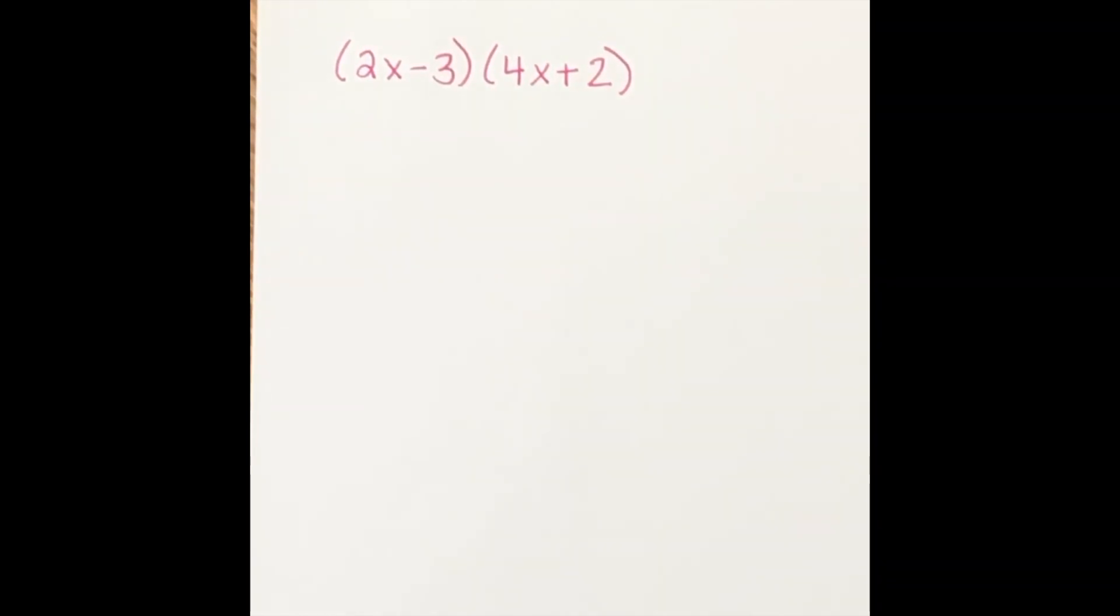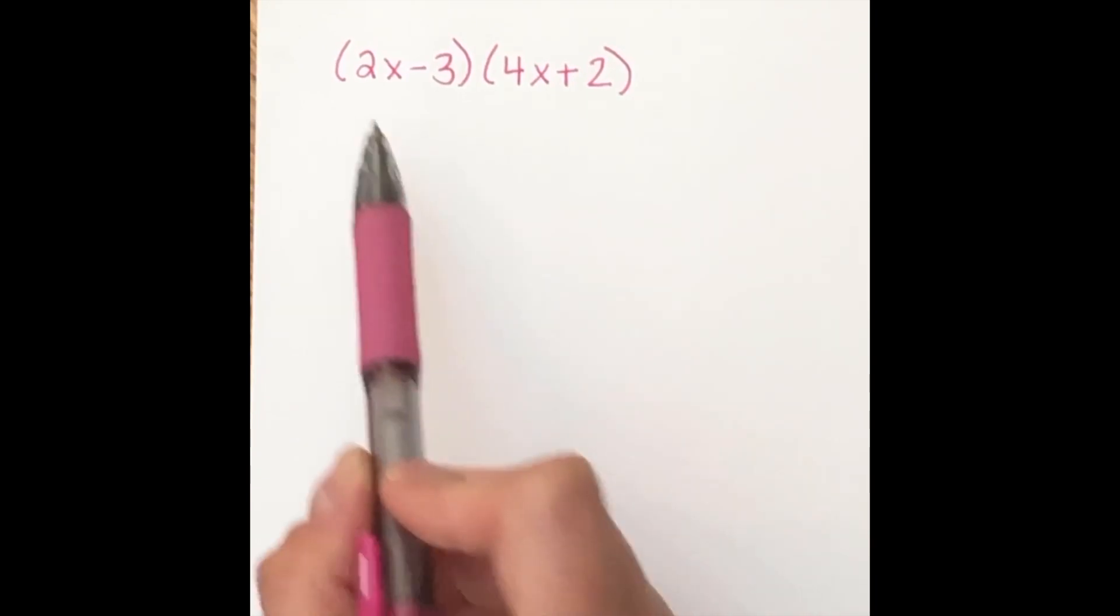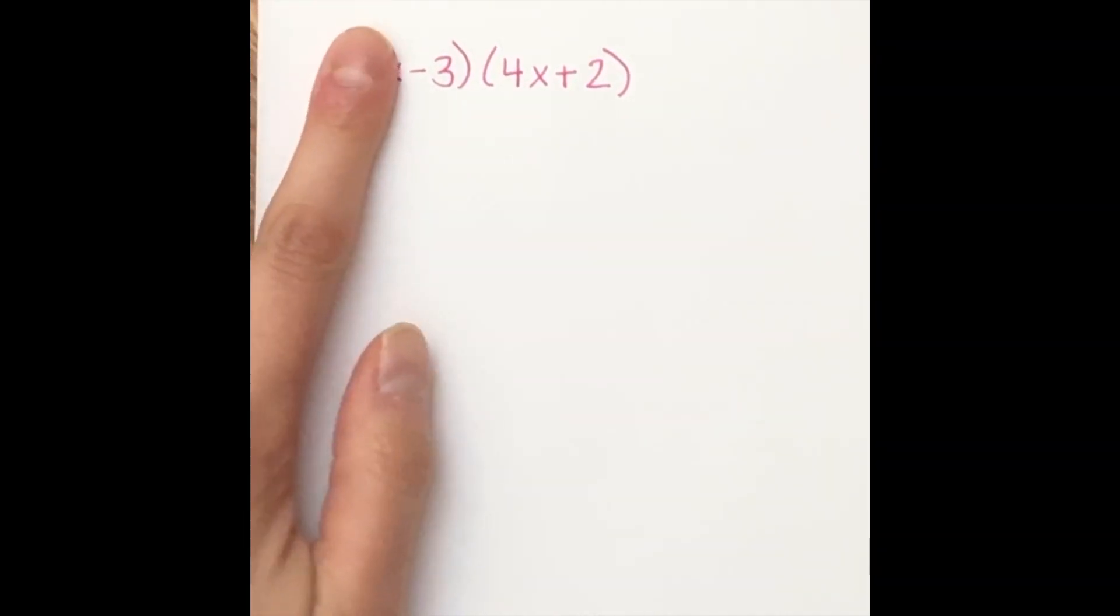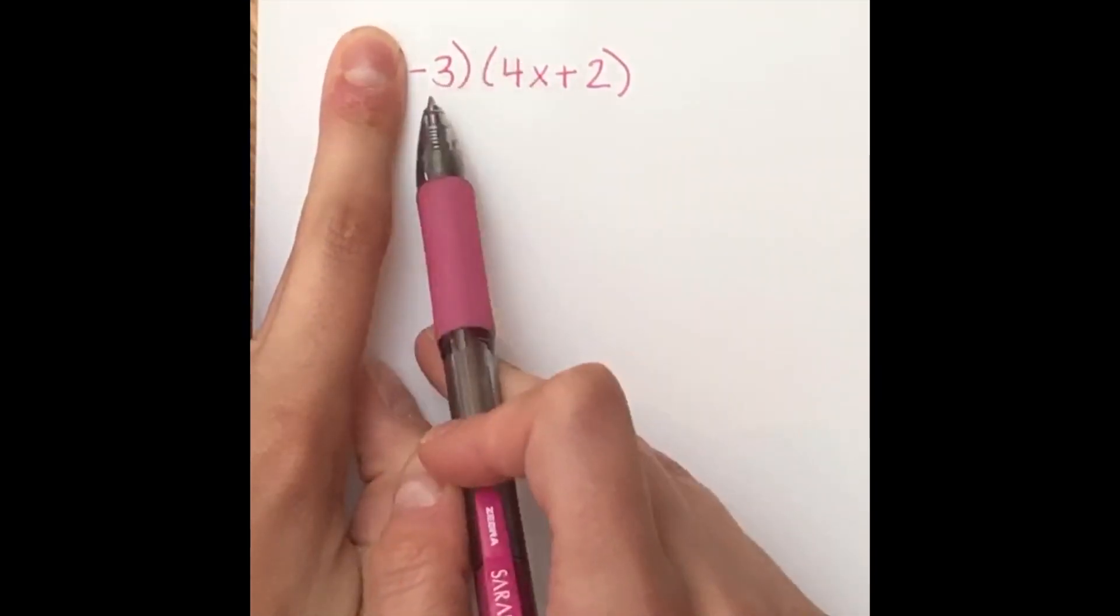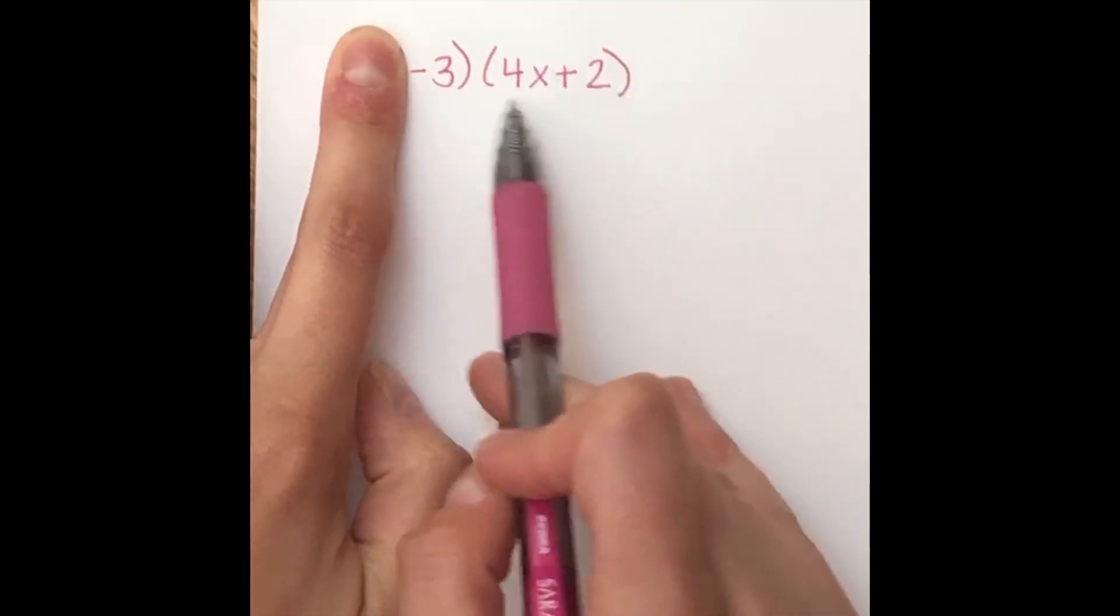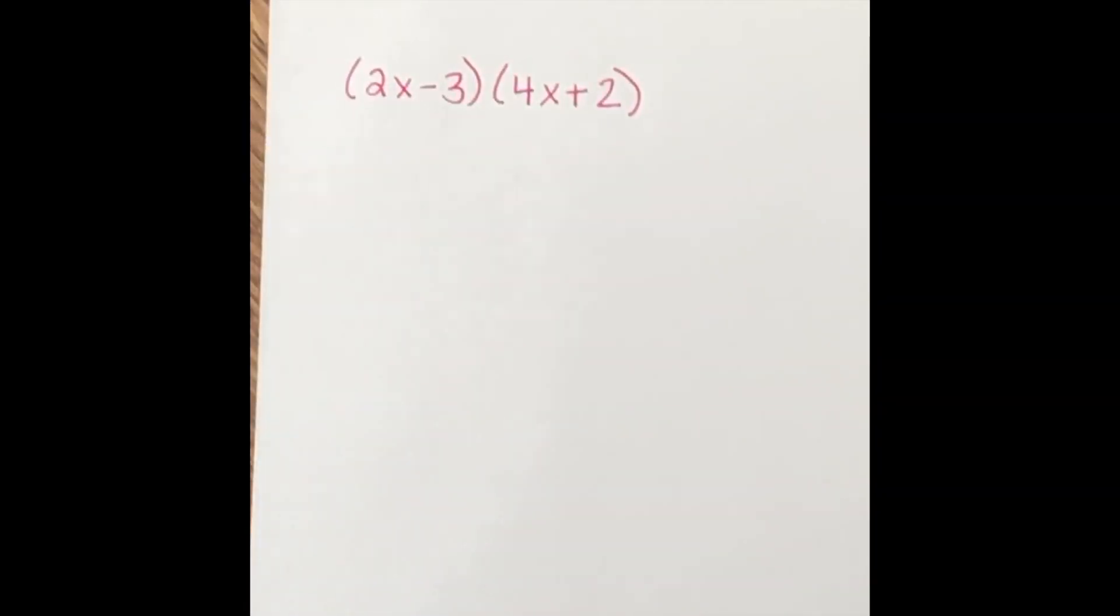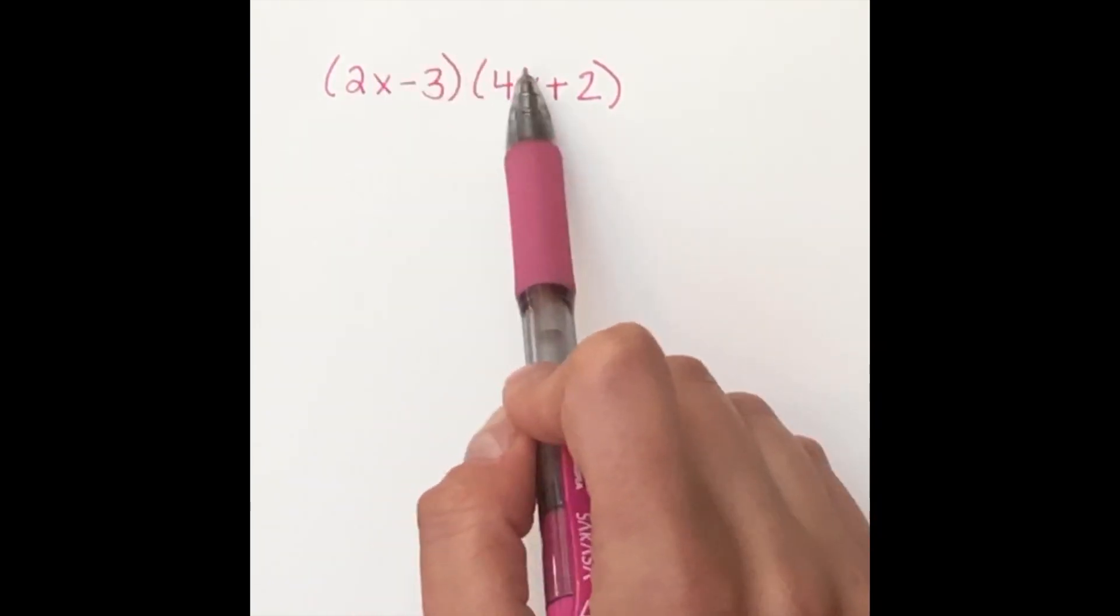So when we talk about multiplying polynomials, one really important type of multiplying is when we multiply two binomials together. Now, just like if I were to cover this up and we were to just multiply negative three into this binomial, we would distribute. But because we have a binomial, which has two terms, we have to do distributing twice.